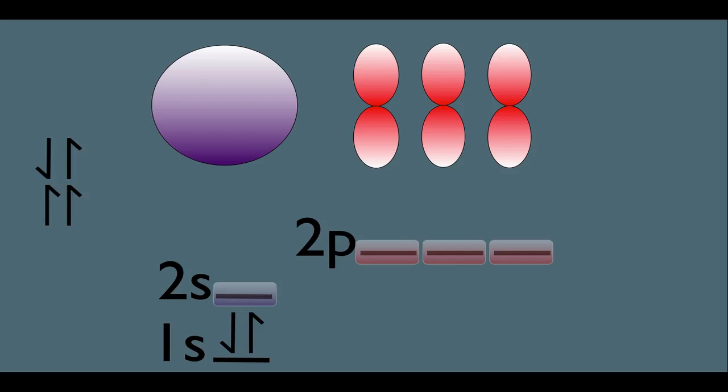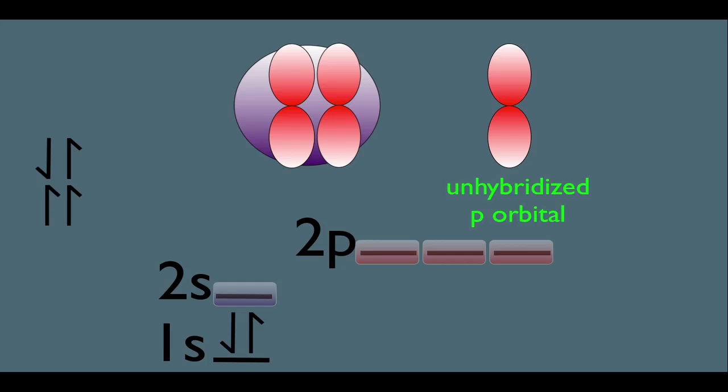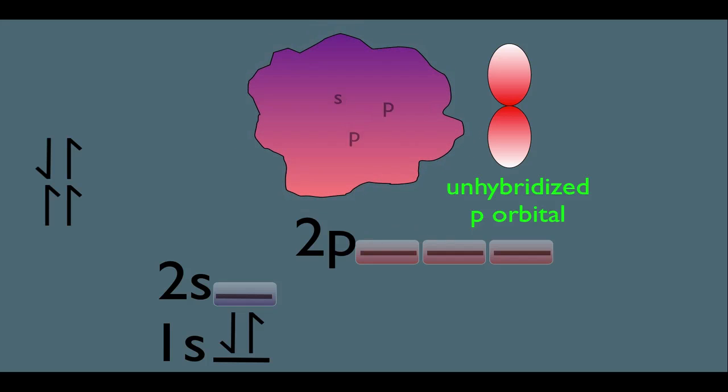But in this particular case, what we're going to do is not hybridize all of the orbitals like in sp³ hybridization. This time, we're only going to hybridize one of the s orbitals and two of the p orbitals. This leaves one p orbital unhybridized, which means in our hybridized arrangement, we have an overall huge orbital here that's simply one part s and two parts p.